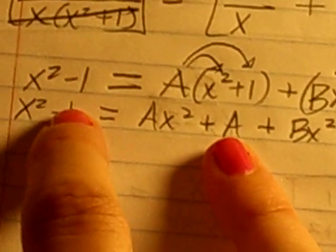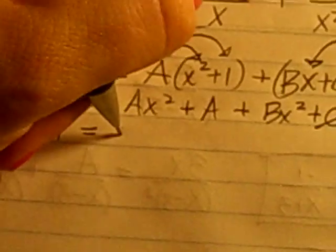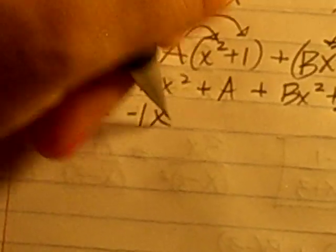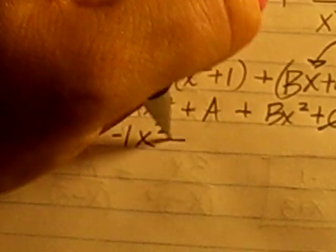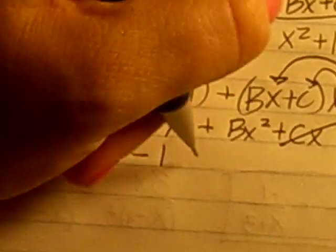Okay, so I know what A is. It's the only constant. So A is negative 1. Now I go ahead and plug that back in, and I can solve for B. So I'll go ahead and say that I have here x squared minus 1 is equal to negative 1 x squared minus 1 plus B x squared.